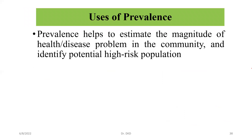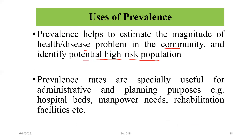One important point to understand is the usage of prevalence — where we use it. Prevalence helps to estimate the magnitude of a health or disease problem in the community and to identify potential high-risk populations. Prevalence rates are especially useful for administrative and planning purposes, for example, hospital beds, manpower needs, and rehabilitation facilities.